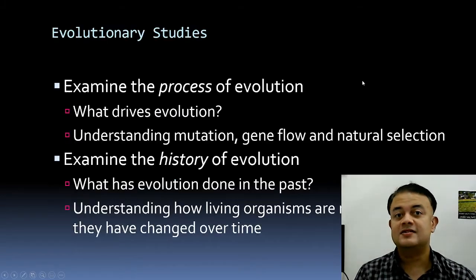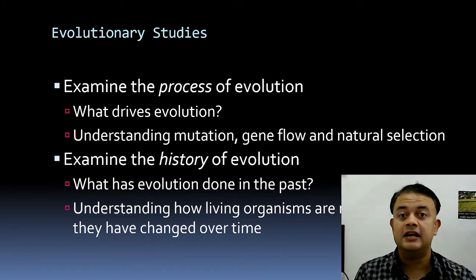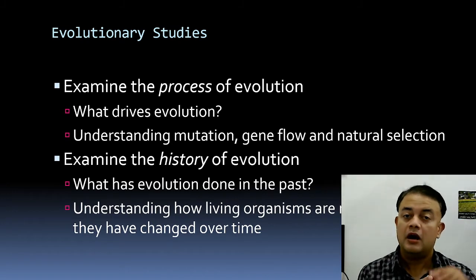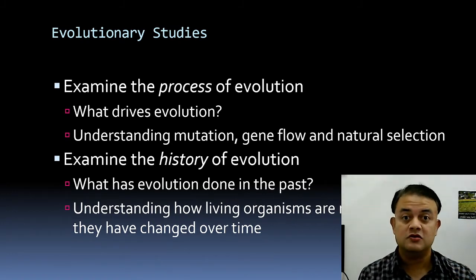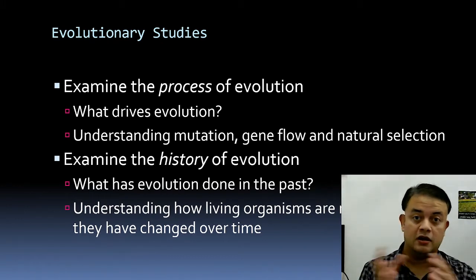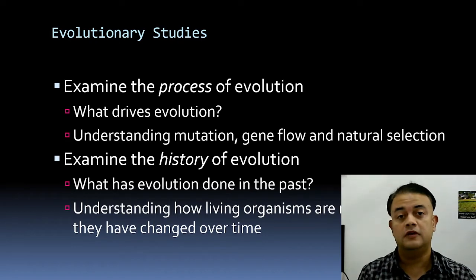Evolutionary studies broadly address two kinds of objectives. The first is examining the process of evolution — what drives organic (biological) evolution. This covers theoretical aspects of evolutionary biology: selection, drift, mutation, gene flow — meaning migration and immigration, the flow of the gene pool — and natural selection.